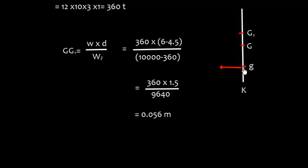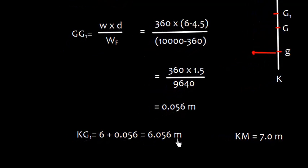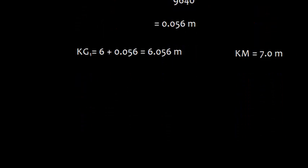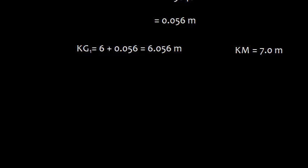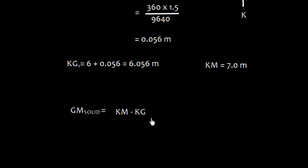If we look carefully here, the weight is discharged from this small g. The top is heavy because weight is discharged from bottom. So, the center of gravity will rise. And I can easily calculate KG1 which is new KG as 6.056 after adding 6 plus this value. KG of the vessel was 6 meter. KM is already given which is 7 meter and assuming that the KM doesn't change, we can easily find the GM solid which is a difference from KM minus KG, which is 0.944 which is 7 meter minus 6.056.